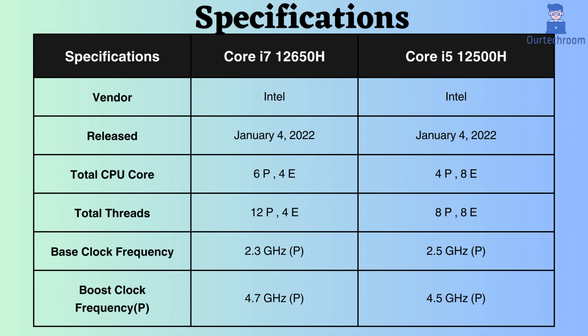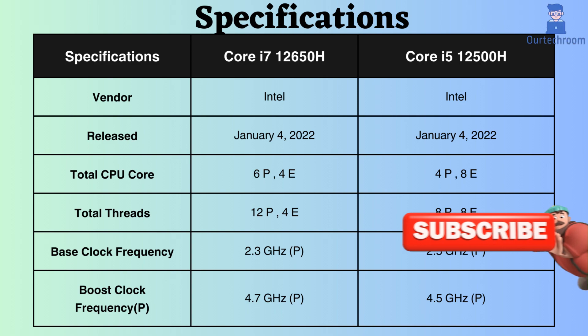The base clock frequency of the Core i7-12650H is 2.3 GHz, while that of the Core i5-12500H is 2.5 GHz. However, when considering the boost clock frequency, the Core i7 reaches 4.7 GHz, whereas the Core i5 reaches 4.5 GHz.